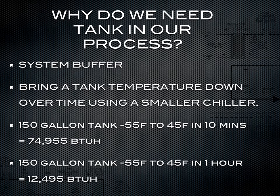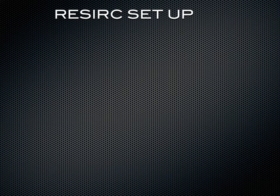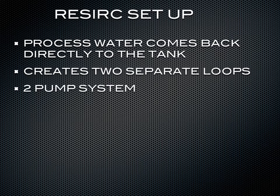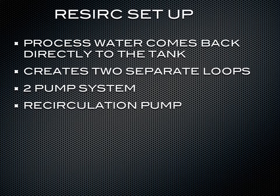This is also a good solution if you have a low demand of flow rate to your process. A recirc tank setup is where the process water comes back directly to the tank. On a once-through chiller, the fluid comes back directly to the chiller evaporator. In the recirc setup, it creates two separate loops using a two-pump system. The first pump is the recirculation pump, whose job is to circulate the fluid to the chiller evaporator and back to the tank, always servicing that evaporator with 2.5 to 3 gallons per minute. The recirc pump also always keeps the tank temperature at your desired leaving water temperature — so if you have 55°F water going out to your process, that tank will be kept at 55°F. The second pump is the system pump, whose job is to pull that cold water off the tank and bring it out to your process to cool your equipment.